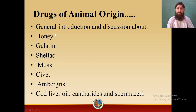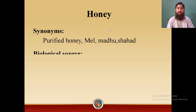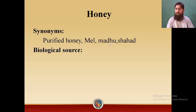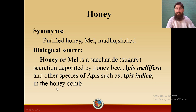Today we will study honey from this list. Honey is also known as purified honey or mel. In Hindi it is called madhu and in Urdu it is called shahed. Honey or mel is a saccharide — a sugary secretion deposited by the honey bee. The biological name of the honey bee is Apis mellifera, and other species of Apis such as Apis indica. Honey is deposited by these bees in the honeycomb.